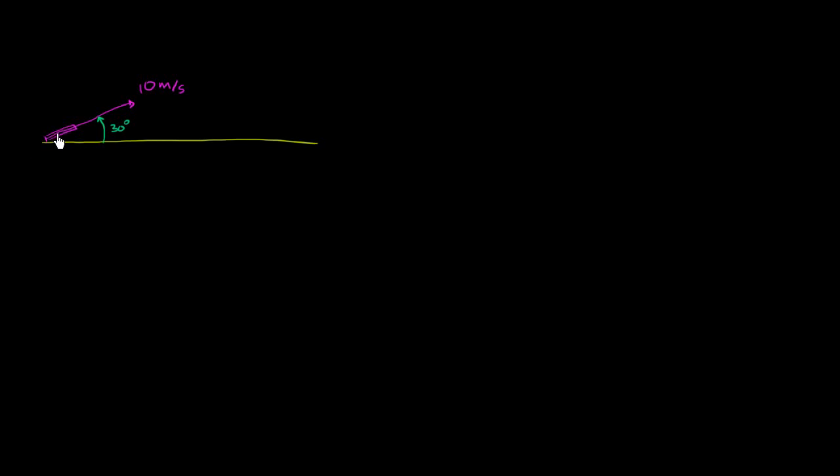So I've got a rocket here, and this rocket is going to launch a projectile — maybe it's a rock of some kind — with a velocity of 10 meters per second. The direction of that velocity is going to be 30 degrees upwards from the horizontal, so the angle between the direction of the launch and the horizontal is 30 degrees.